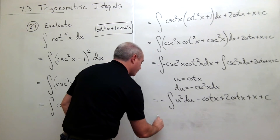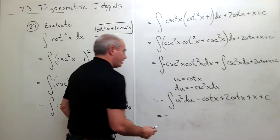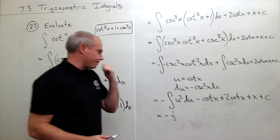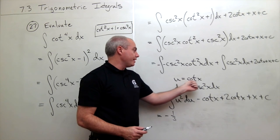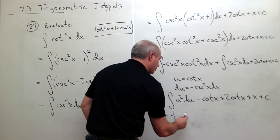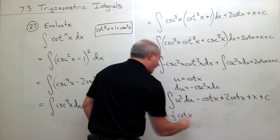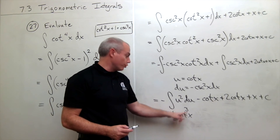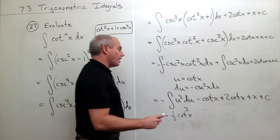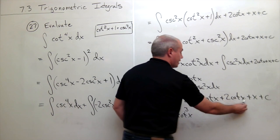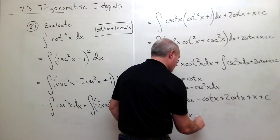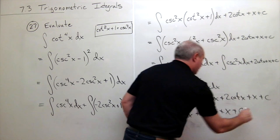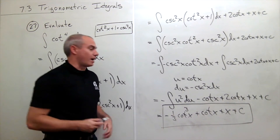Let's take that antiderivative. The antiderivative of u squared is one-third u cubed, so with the negative sign it's negative one-third u cubed. Since u is cotangent of x, that's negative one-third cotangent cubed of x. Then minus cotangent x plus two cotangent x — two minus one — gives plus one cotangent x, plus x plus c. And here is my final antiderivative.